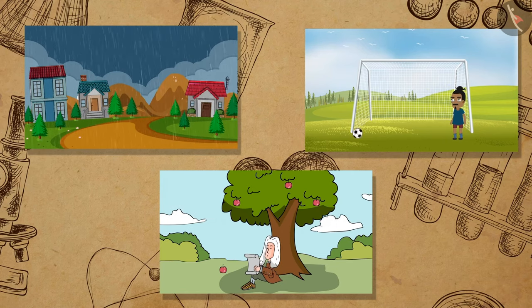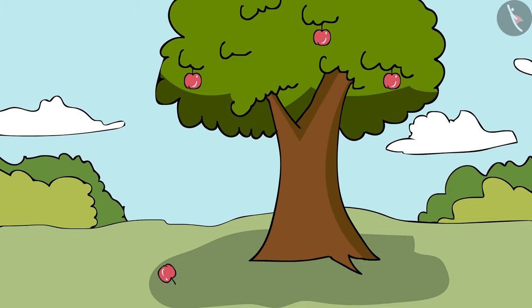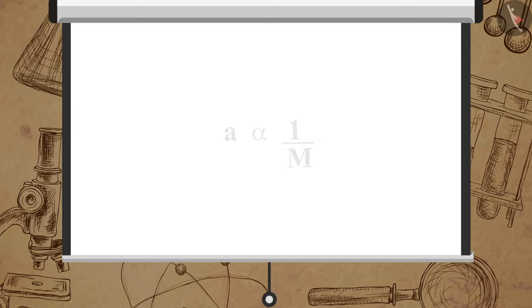Therefore we can conclude that rain, football, and apples are attracted to the earth. But do these objects also attract the earth? If yes, then why don't we see the earth moving towards the apple?